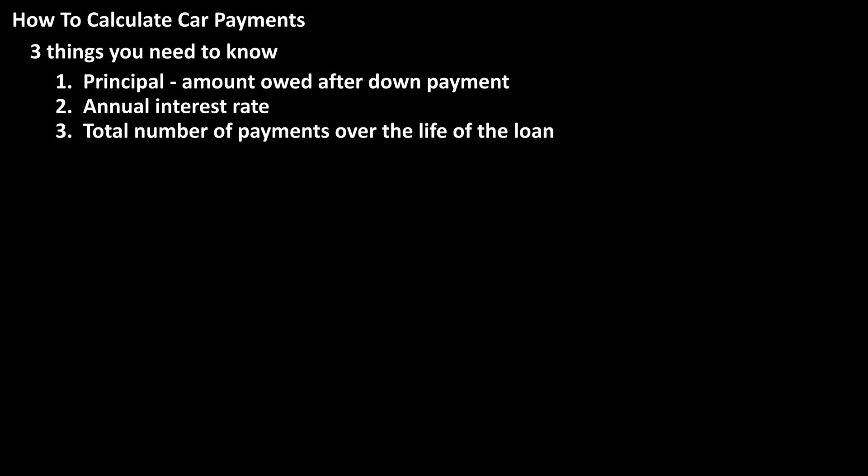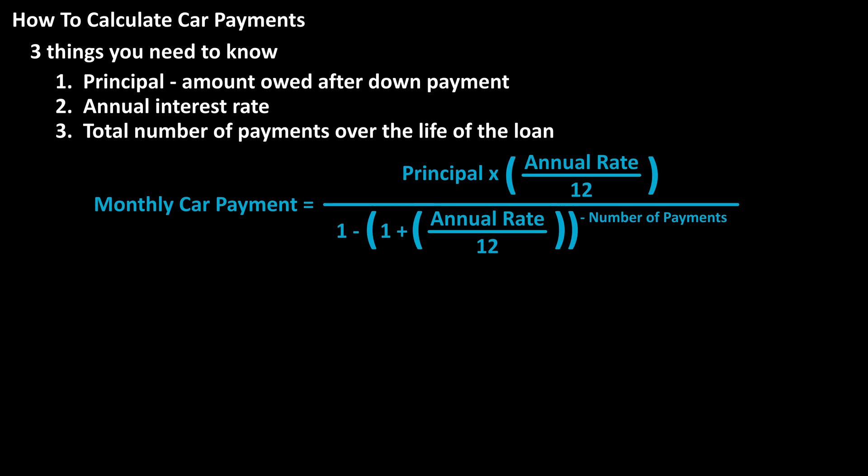The formula for calculating a car payment is the car payment equals the quantity, the principal times the quantity, annual percentage rate divided by the number of months in a year, so 12, divided by the quantity,